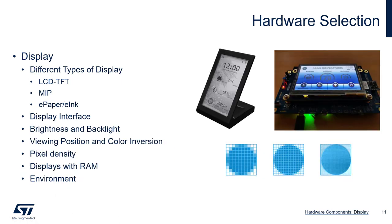When selecting a display, there are different types to choose from. One of the more common types is the LCD TFT — the thin-film transistor variant — which is used in many of our STM32 discovery kits and evaluation boards, such as the STM32-H725 discovery kit. Another type is the MIP display — memory in pixels — which has low power consumption and can be very good for wearables. The third type, which fits in very specific use cases, is the E-paper E-ink display, which also has very low power consumption but is quite slow and only available in monochrome.